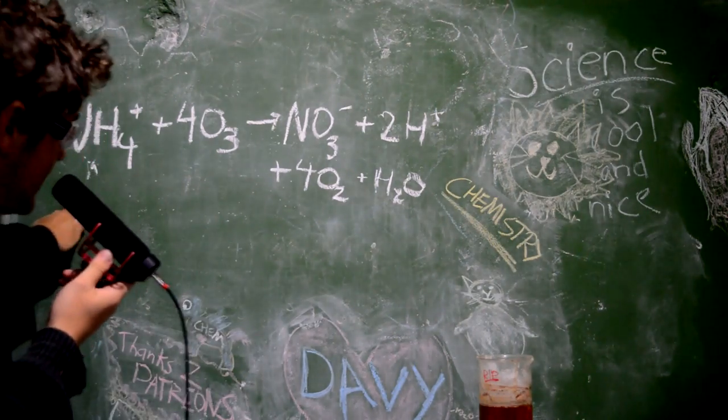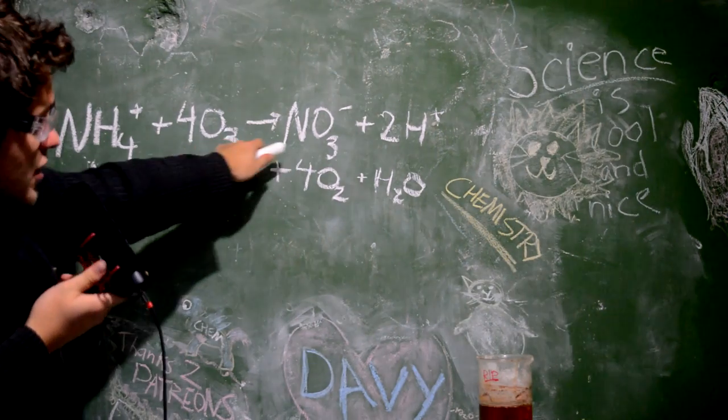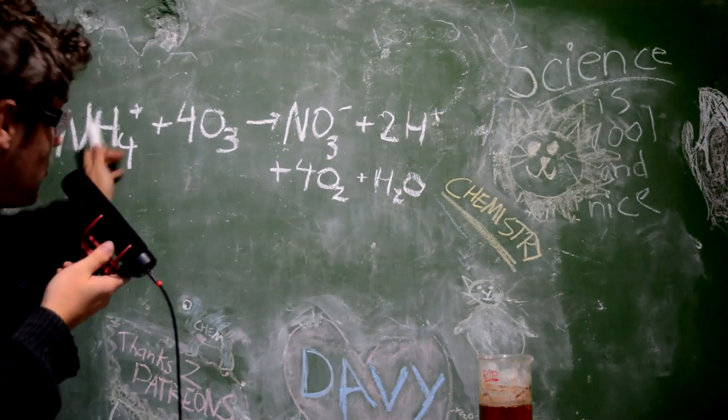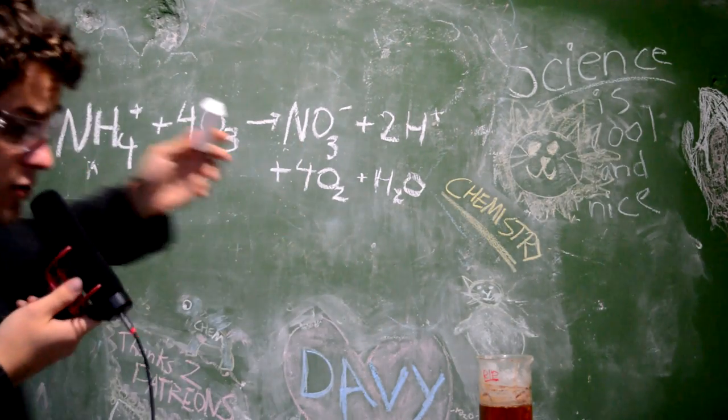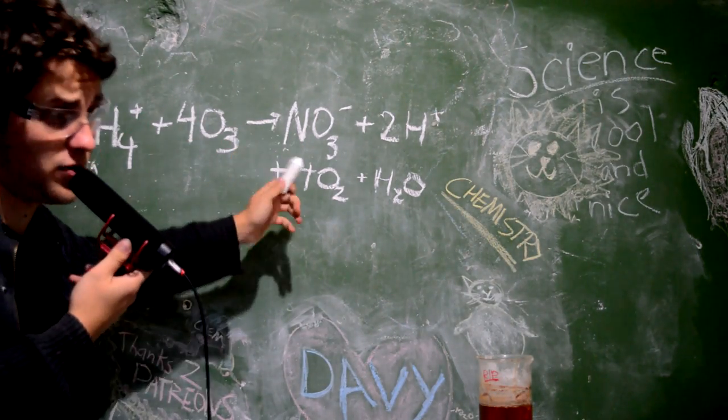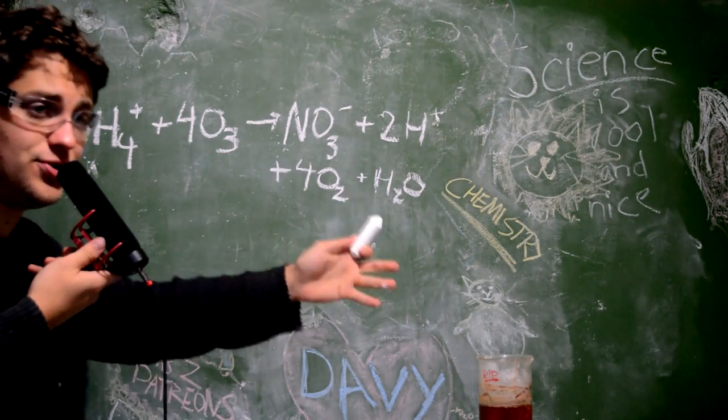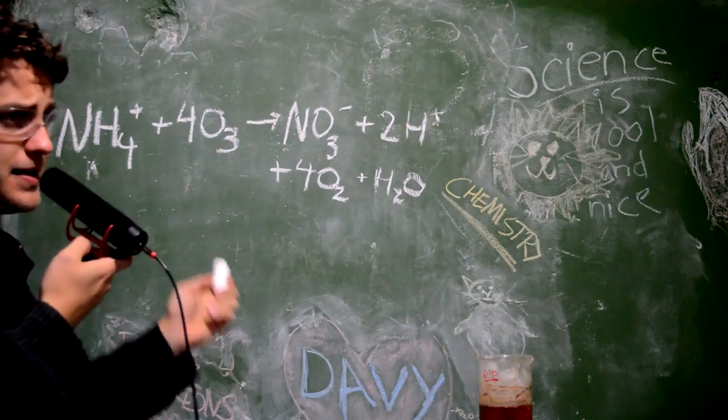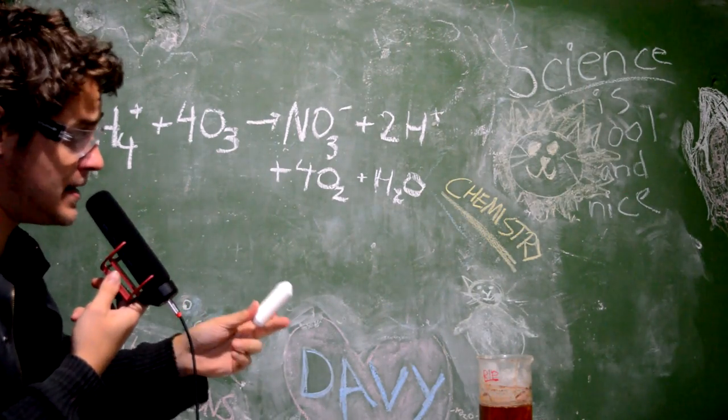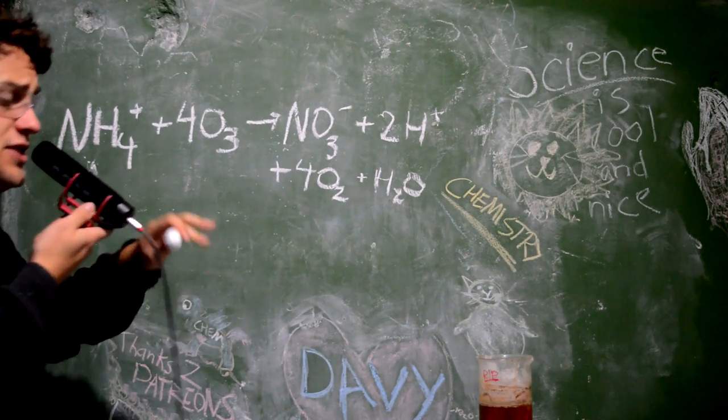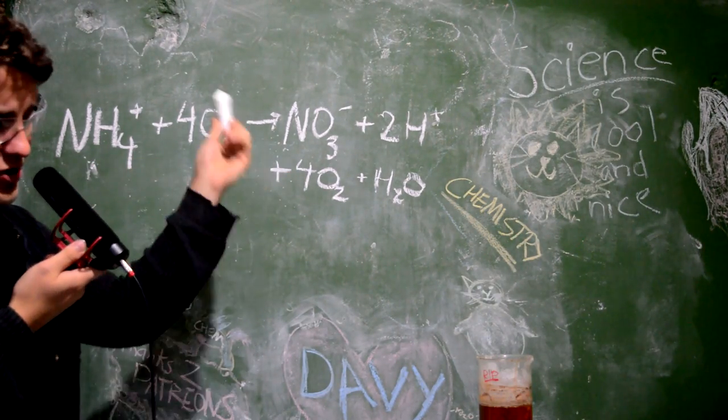Of course, if we're doing this in a vast excess of ammonium ions, this nitrate is going to form ammonium nitrate when we boil everything off. So it's a way of forming ammonium nitrate, a chemical that is increasingly hard to get, from ammonia just using air and electricity.